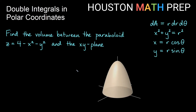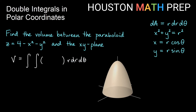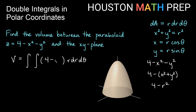Now we want to find the volume between the paraboloid z equals 4 minus x squared minus y squared and the xy plane. We set up a double integral with the height function being this top surface. The issue is we can't leave it in x's and y's if we're integrating r dr d theta — we need things in terms of r and theta. Recognizing 4 minus x squared minus y squared as 4 minus the quantity x squared plus y squared, and since x squared plus y squared equals r squared, our top surface becomes z equals 4 minus r squared.